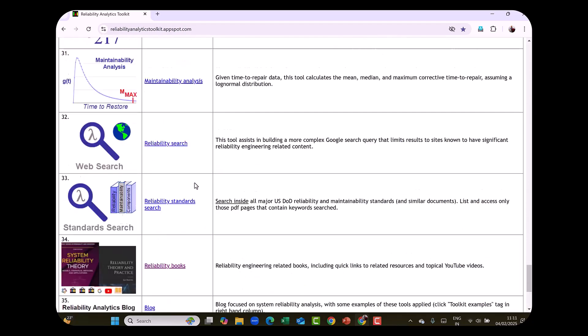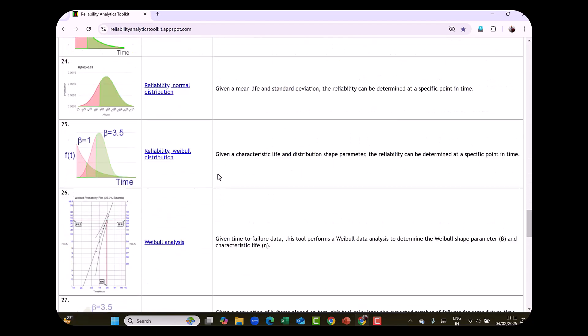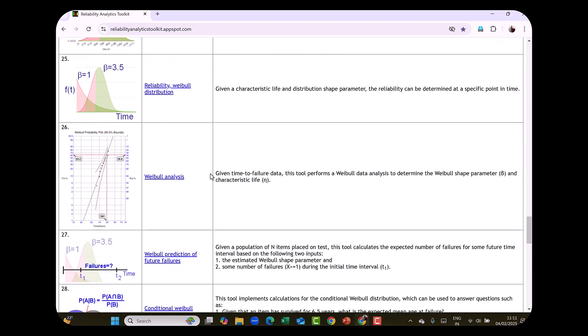So this is the page that you need to access. If you want to perform the Weibull analysis, you have to click on the Weibull analysis choice. It says given time to failure data, this tool performs a Weibull data analysis to determine Weibull shape parameter beta and characteristic life eta. So click on that.